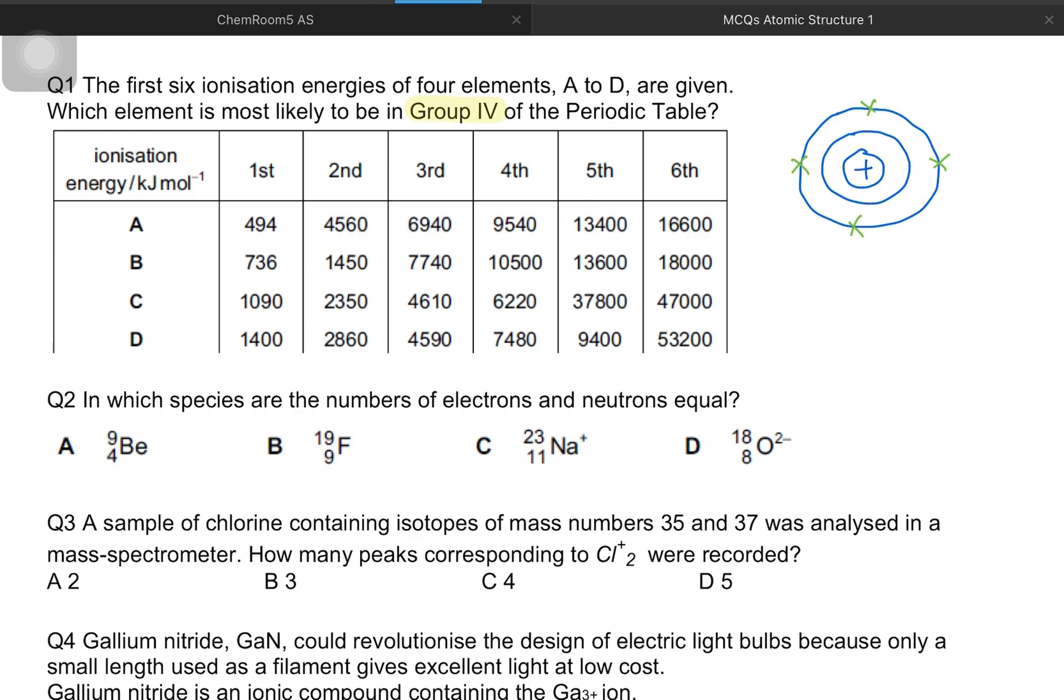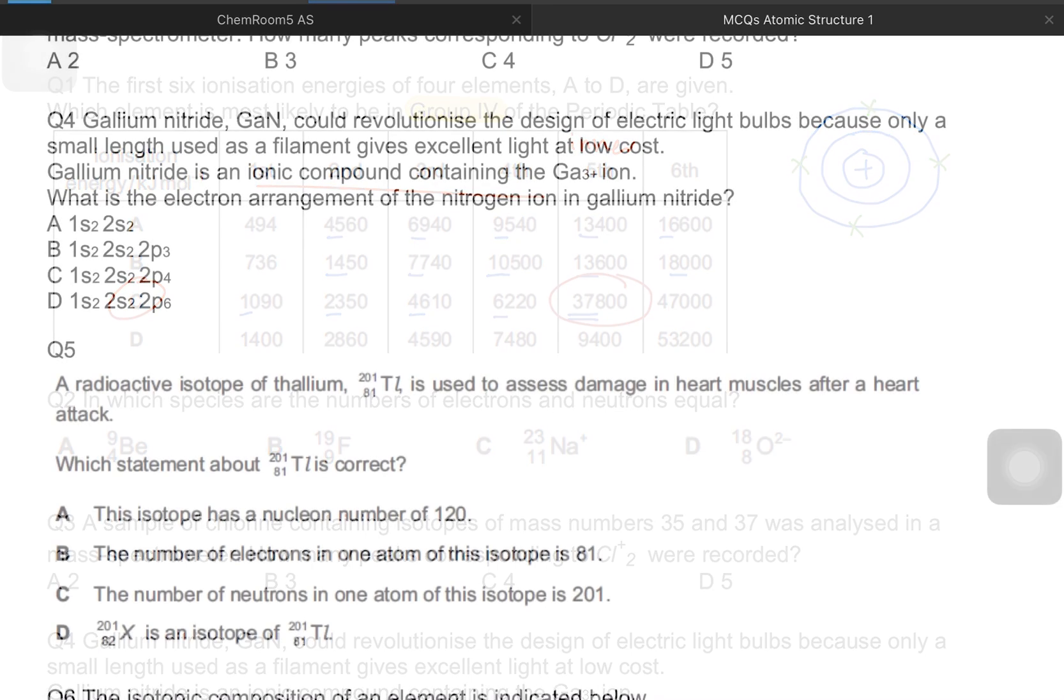Option A has all similar ionization energies. Second is four thousand, then six thousand, nine thousand, thirteen and sixteen. Option B has one thousand, then seven thousand, ten thousand, thirteen thousand, eighteen thousand, again similar. Option C has one thousand, two thousand, four thousand, six thousand, but the fifth ionization energy is thirty seven thousand. There is a really big jump after the fourth value, which means the fifth electron is coming from the inner shell. So option C is the right answer.